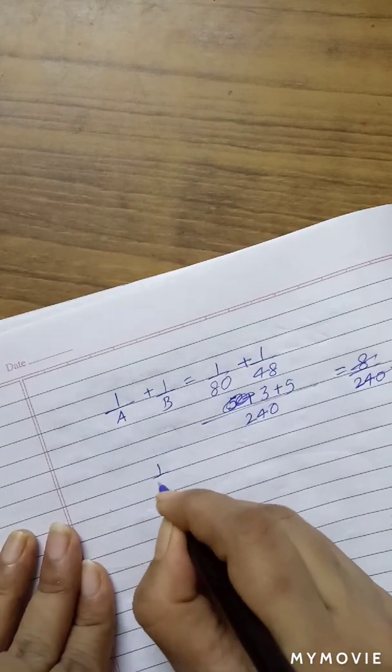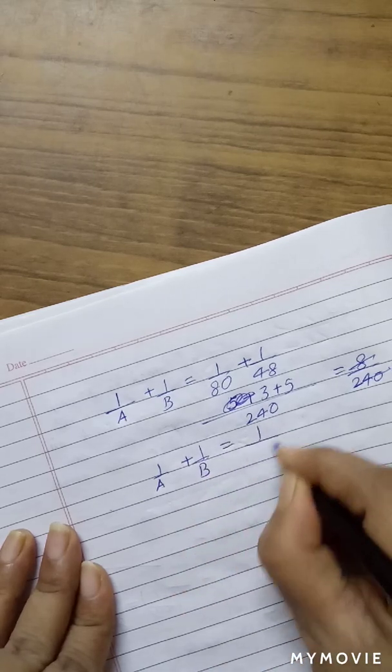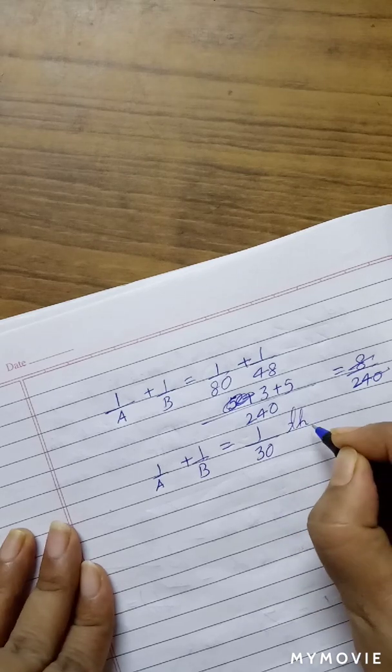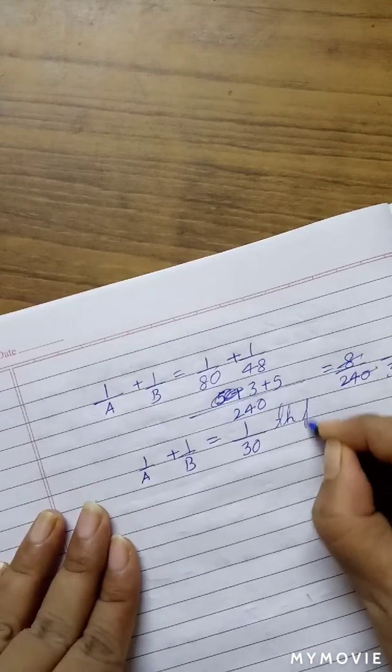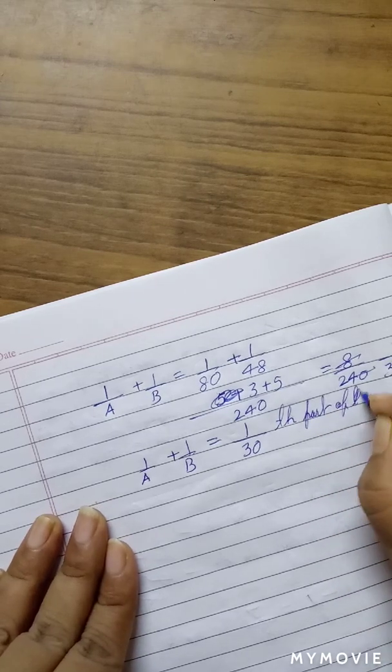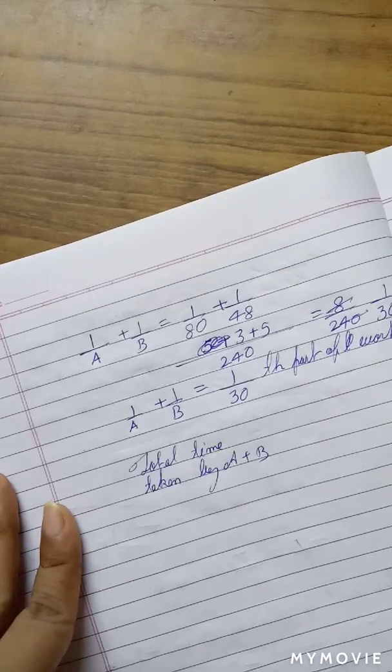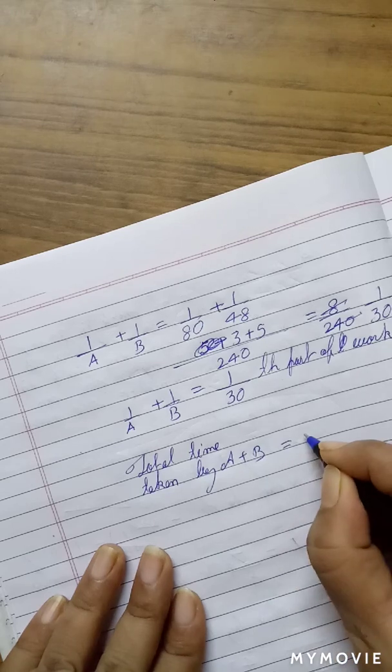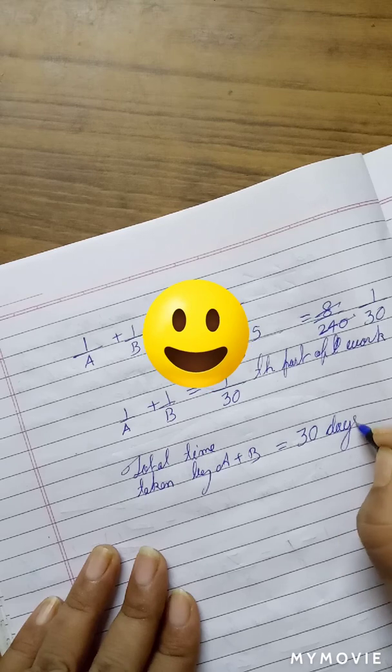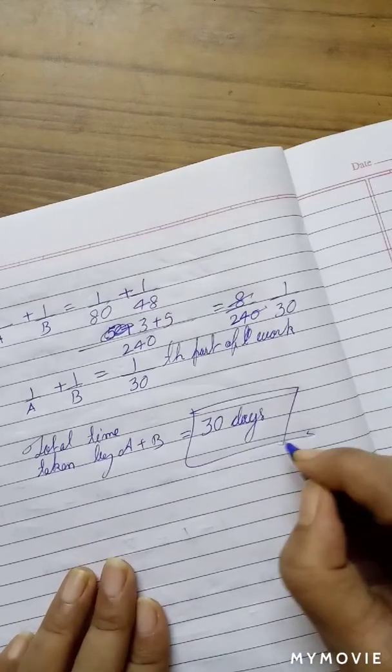Together in one day, A and B will do 1 upon 30th part of the work. Total time taken by B and A is equal to 30 days. Together they will do the work in 30 days. That was easy.